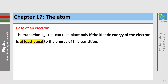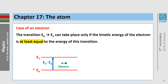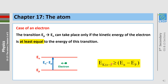The energy can also be provided by another particle, like an electron. In the case of the electron, the transition from Ep to En can take place only if the kinetic energy of the electron is at least equal to the energy of this transition — that is, kinetic energy of the electron must be greater than or equal to En minus Ep.